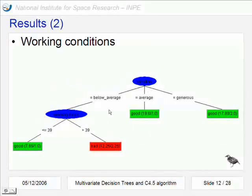Here are the good cases and here are the bad cases that must have vacation below average and working hours higher than 39.